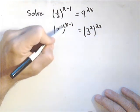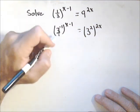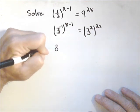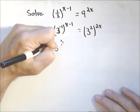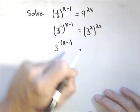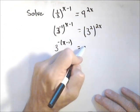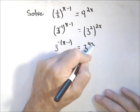Now, we can use a property of exponents, so an exponent raised to another exponent, they multiply. So over here we have 3 to the negative x minus 1, and over here, same thing, we have 3 to the 4x.